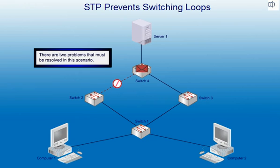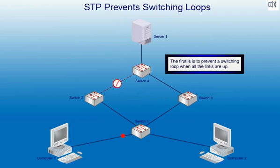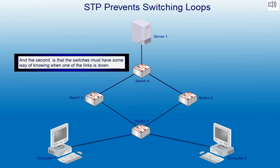There are two problems that must be resolved in this scenario. The first is to prevent a switching loop when all the links are up, and the second is that the switches must have some way of knowing when one of the links is down.